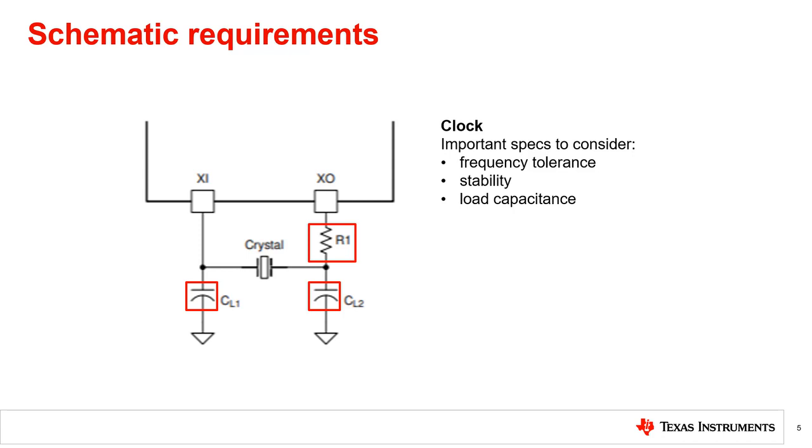R1 is a current limiting resistor that may be required if the maximum dry level of the crystal is less than 500 megawatts.